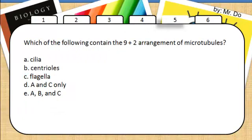5. Which of the following contain the 9 plus 2 arrangement of the microtubules? That would be A and C, the cilia and flagella. The 9 to 2 arrangement is found throughout the whole strand.